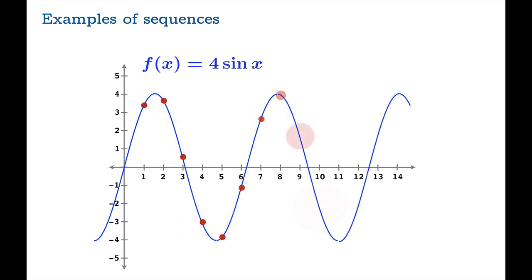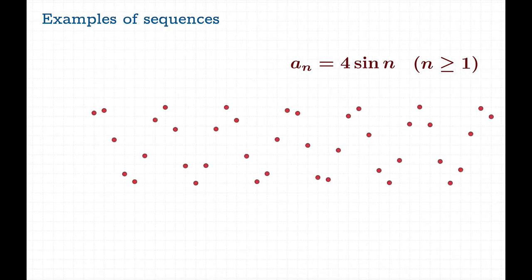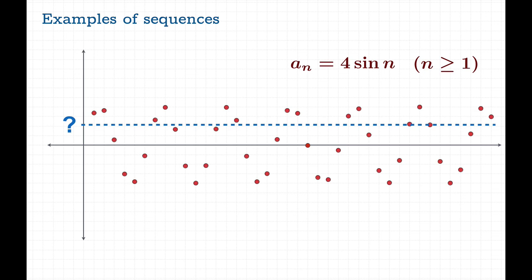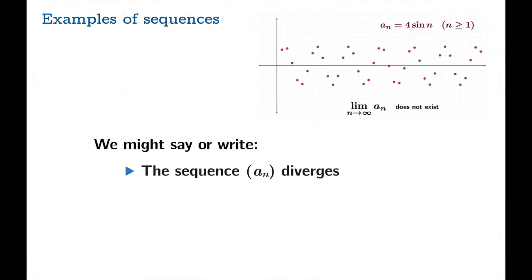So here's another one. Let's take 4 sin x and restrict our attention to, once again, the natural numbers. And we'll take a step back and look at this graph. And we realize that there's no horizontal asymptote. There's no limiting value. For the purposes of this sequence, these are basically random numbers between negative 4 and 4. And so the best we can say in this case about the limit is that it does not exist. And there's really not much to say. The sequence a_n diverges or a_n is a divergent sequence. We can't even really describe usefully the way in which it fails to exist. The values bounce around, but we have no standard way of writing that fact.